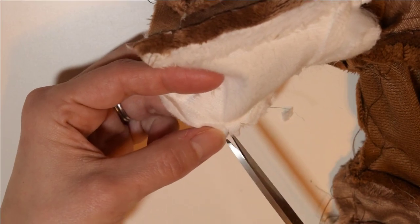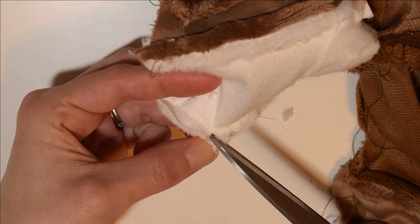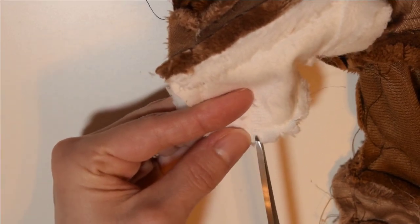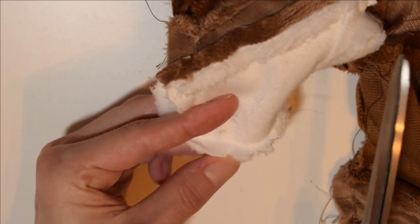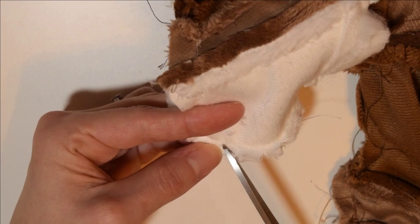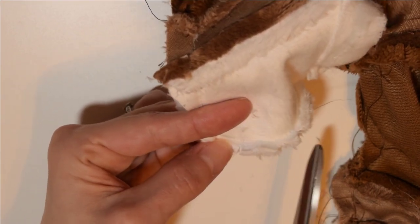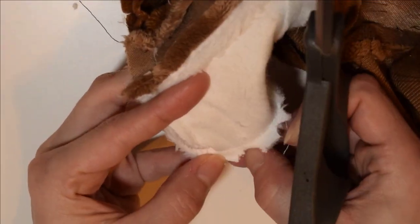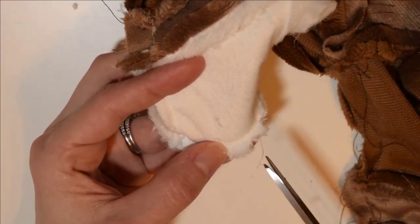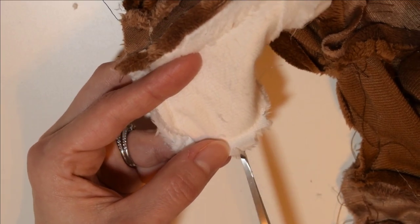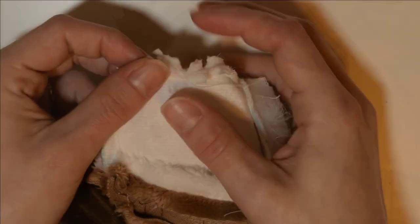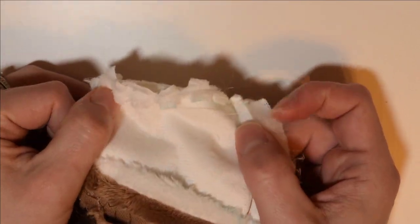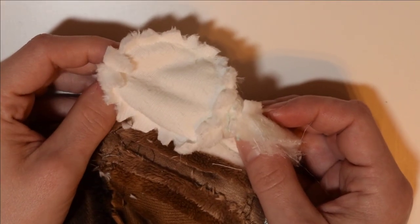And do this all around the seam allowance. Just make sure that you are not clipping into the actual seam because then you're going to cut into it and you're going to have to redo it. All right, I've cut all these notches into my seam allowance. So now I can go ahead and flip it right side out.